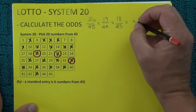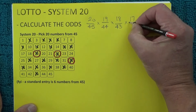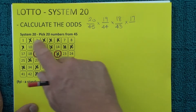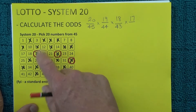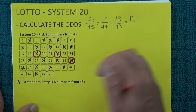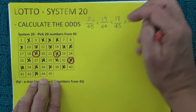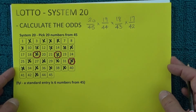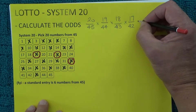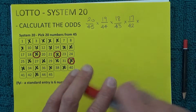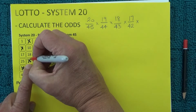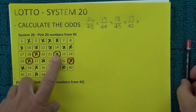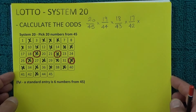When the fourth number is drawn, you've got 17 unmatched numbers with an X that haven't been matched, and three numbers have come out of the barrel, so you're left with 17 chances in 42 of matching the fourth number drawn. Let's assume it was number 26 and mark that off to show four numbers out of your 20 have been matched.